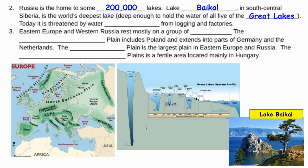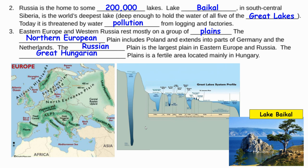Today, Lake Baikal is threatened by water pollution from logging and factories. Eastern Europe and Western Russia rest mostly on a group of plains. The Northern European Plain includes countries like Poland and extends into parts of Germany and the Netherlands.